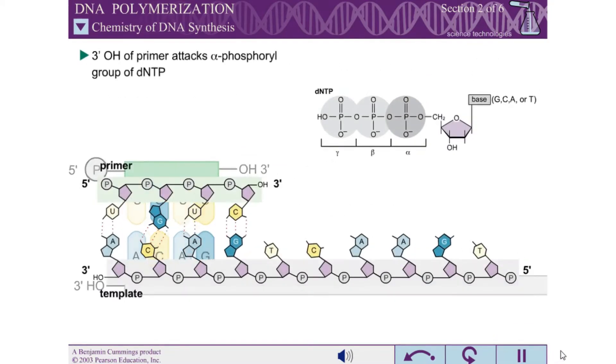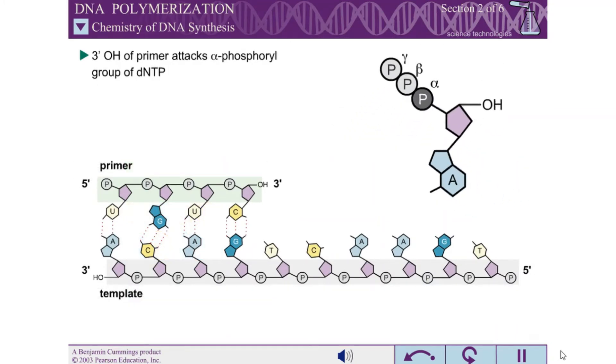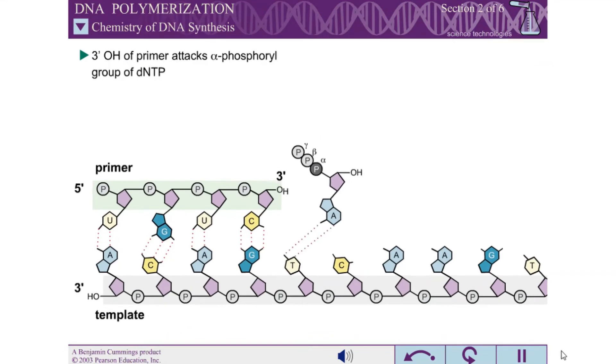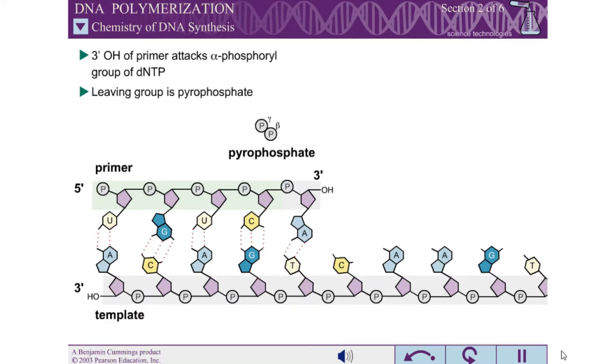The 3 prime hydroxyl of the primer strand attacks the alpha phosphoryl group of the incoming DNTP in a nucleophilic substitution reaction. The leaving group for the reaction is pyrophosphate, which is formed from the beta and gamma phosphoryl groups of the DNTP.